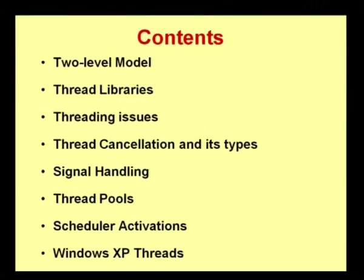We saw three multithreading models. The first is the one-to-one model, where one user thread is mapped to one kernel thread. The second is the many-to-one model, where many user threads are mapped to one kernel thread. The third is the many-to-many model, where many user threads are mapped to many kernel threads. A kernel thread is one available in the operating system, while a user thread is one created by a user. Today, we will continue with these models and look at the two-level model.